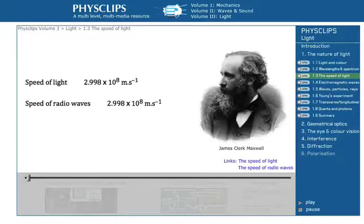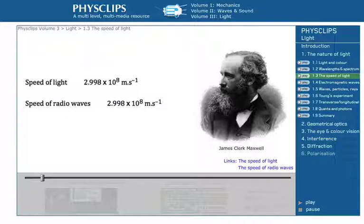Maxwell also realised in his equations of electromagnetism that the speed of light is constant, and with the right equipment we can actually measure the speed of light in the laboratory. When James Clerk Maxwell discovered that the speed of electromagnetic waves was similar to that measured for light, he proposed that light was an electromagnetic wave. So let's measure the speeds.